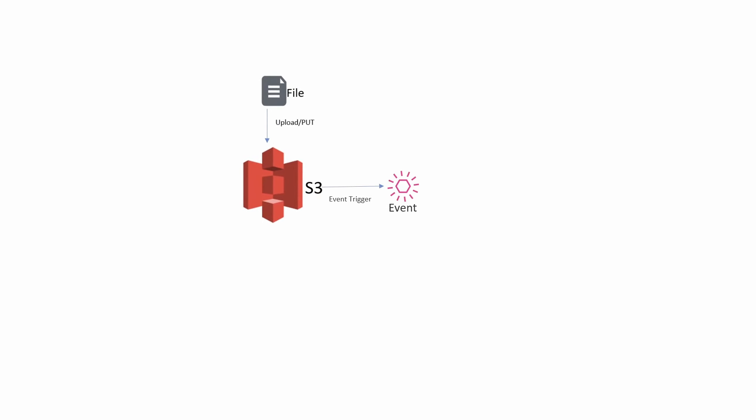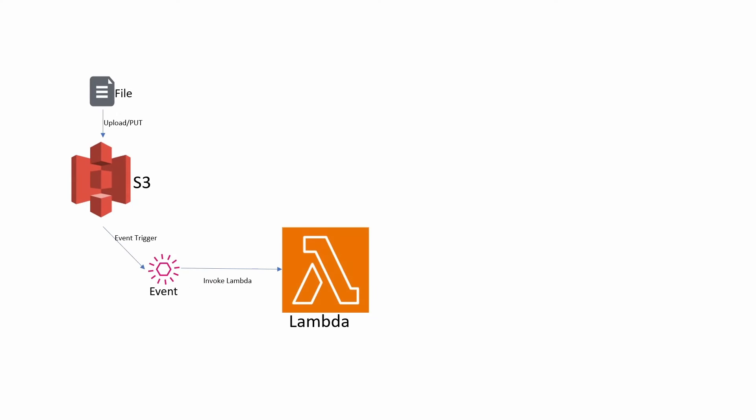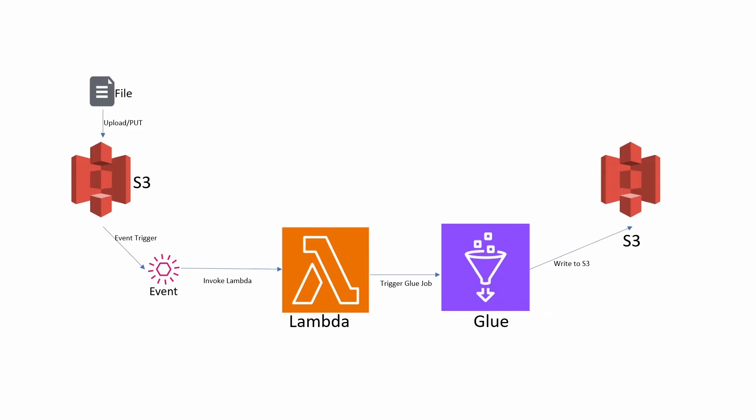This event will have a Lambda invocation associated with it, so every time a new file gets placed in the S3 bucket a Lambda function will get invoked, and this Lambda function will trigger a Glue job. This Glue job will perform ETL transformations on the data. We are going to pass input arguments through the AWS Lambda function, and these input arguments will be passed to the Glue job during runtime. Using those runtime parameters, the Glue job will perform the transformation and write the transformed data back to the S3 bucket.